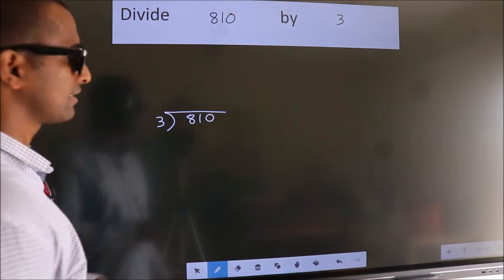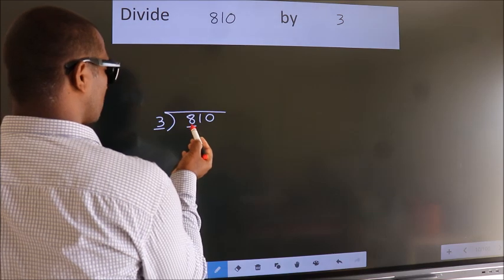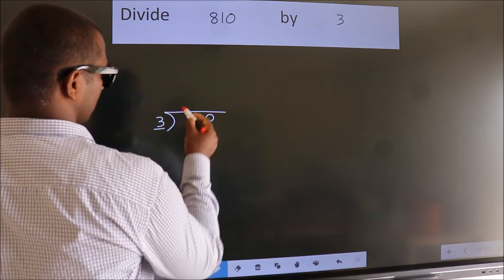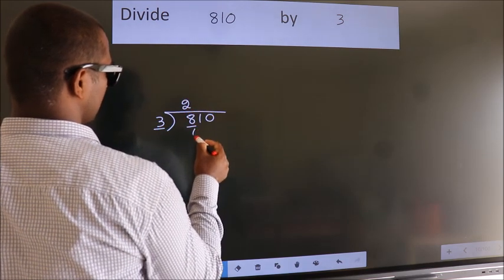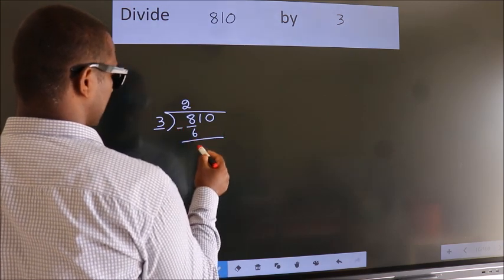Next. Here we have 8. Here 3. A number close to 8 in 3 table is 3 2s, 6. Now we should subtract. We get 2.